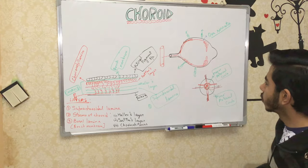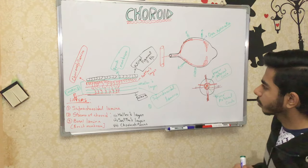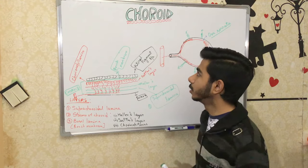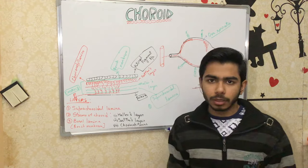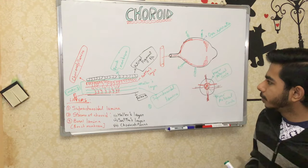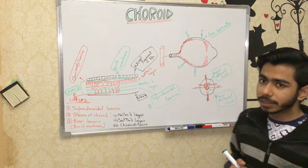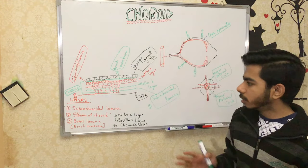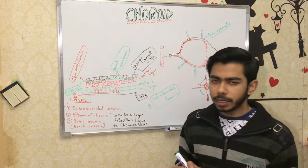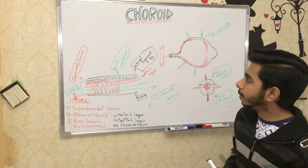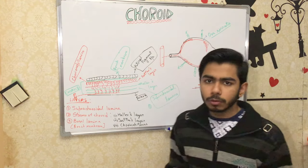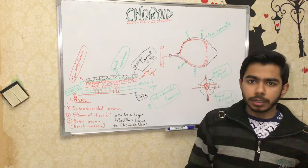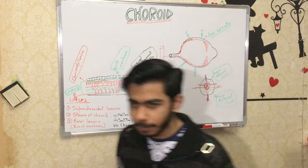This was about the overall features of the choroid, including its blood supply, arterial supply, and venous drainage. I hope you like this video on the choroid. Keep watching, thank you.